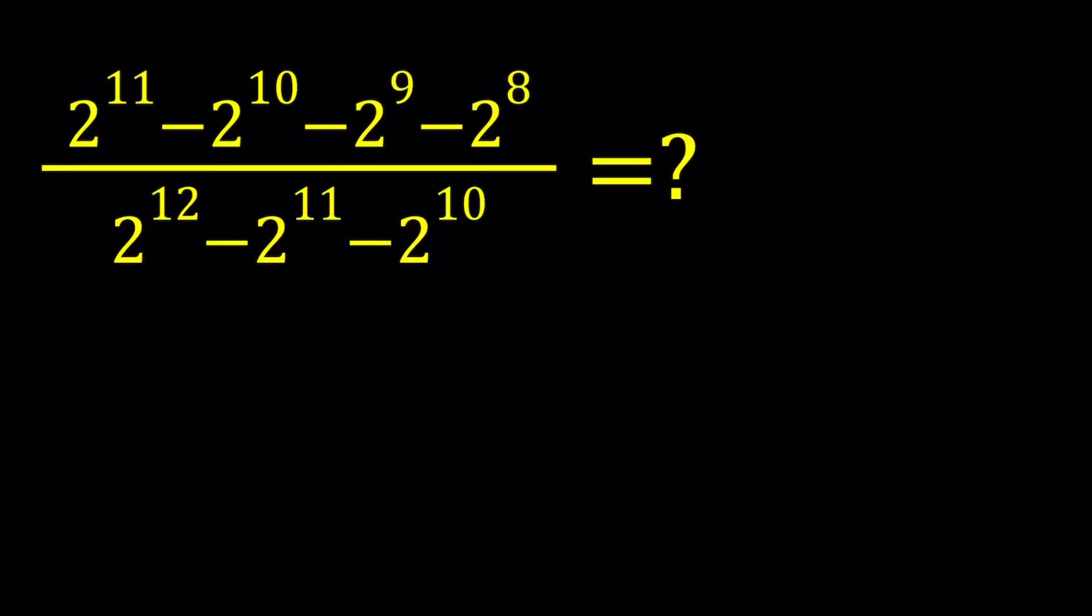Hello everyone, in this video we're going to be simplifying an exponential rational expression. We have 2 to the power 11 minus 2 to the 10 minus 2 to the 9 minus 2 to the 8 divided by 2 to the 12 minus 2 to the power 11 minus 2 to the power 10.